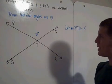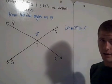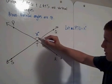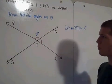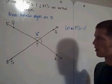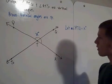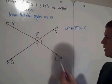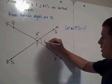Notice that angle PTQ and angle QTR are a linear pair. That means the measure of angle PTQ plus the measure of angle QTR must equal 180. Well, that means the measure of angle QTR must be 180 minus x degrees.